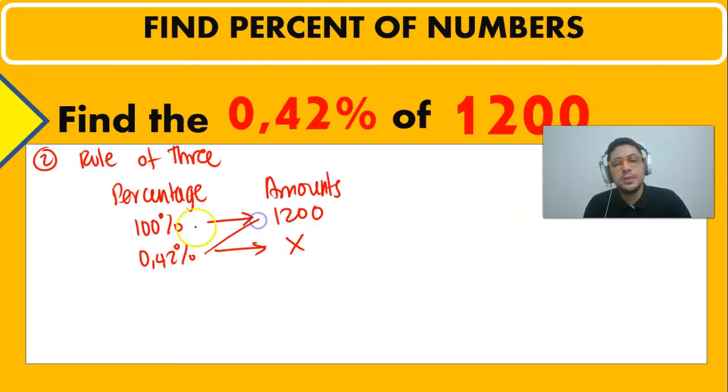So again, we can cross multiply. So 100% times X is going to be equal to 0.42% multiplied by 1,200.